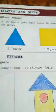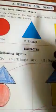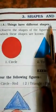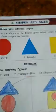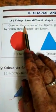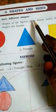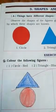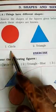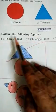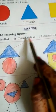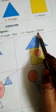Number three: shape and size. Things have different shapes. Observe the shapes given below and learn the names by which these shapes are known: circle, triangle, square. Exercise A: color the following figures — circle in red, triangle in blue, square in yellow.